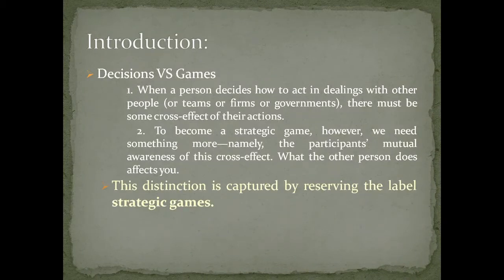Without the cross effect, it becomes only a decision — like a decision to get up early in the morning to go for supravatam. For some, that might depend upon whether others are getting up early or not; for others, it depends on sheer determination alone. If a person takes this decision without taking into account the decisions of others, that is only a normal decision. But it becomes a strategic game only when the participants are mutually aware of the cross effect — what one person does affects the other.